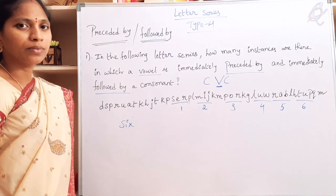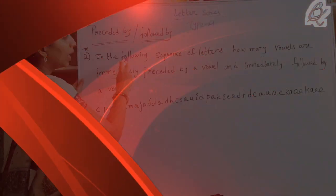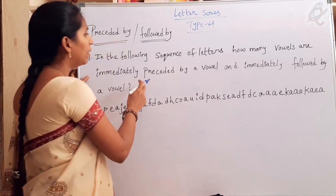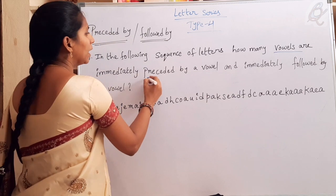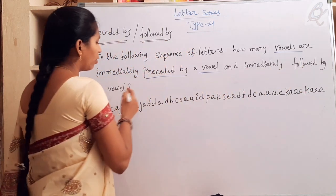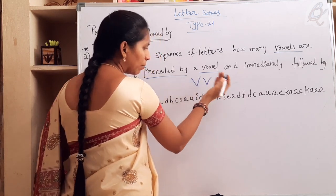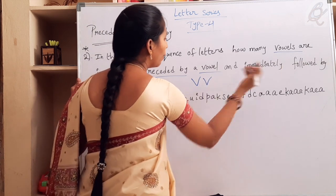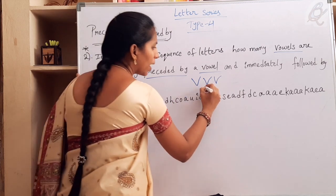Very easy questions. Let us go to the next example. In the following sequence of letters, how many vowels are immediately preceded by a vowel and immediately followed by a vowel? That means the previous letter is a vowel and the following letter is also a vowel. Check for this pattern.